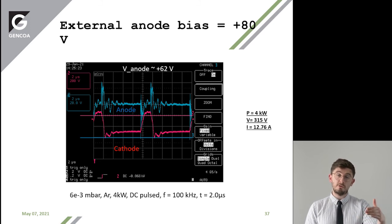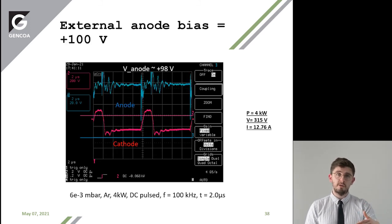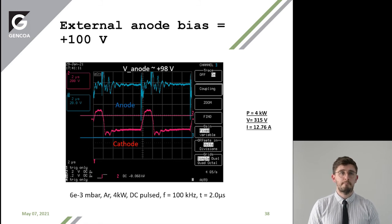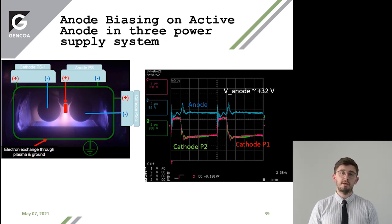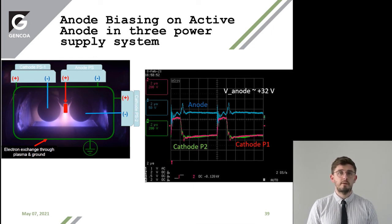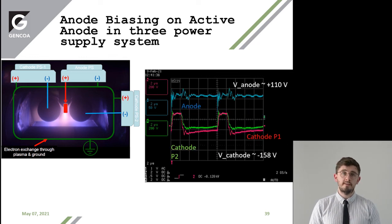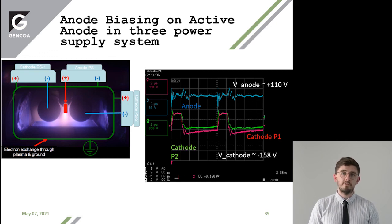You can see the shift as we increase that anode voltage up to 100 volts. Now we look at biasing the system with two different power supplies for each cathode and then a DC power supply for the anode, demonstrating that we can do this stably. When we increase the anode voltage to in excess of 100 volts, you can see that both target voltages decrease, becoming less negative, as we increase the anode voltage.